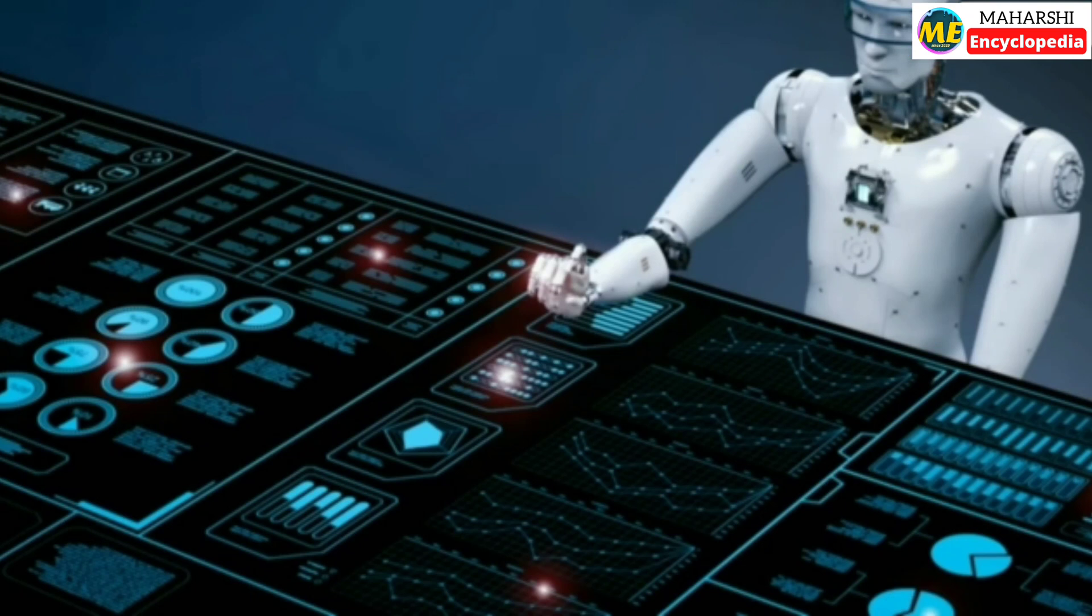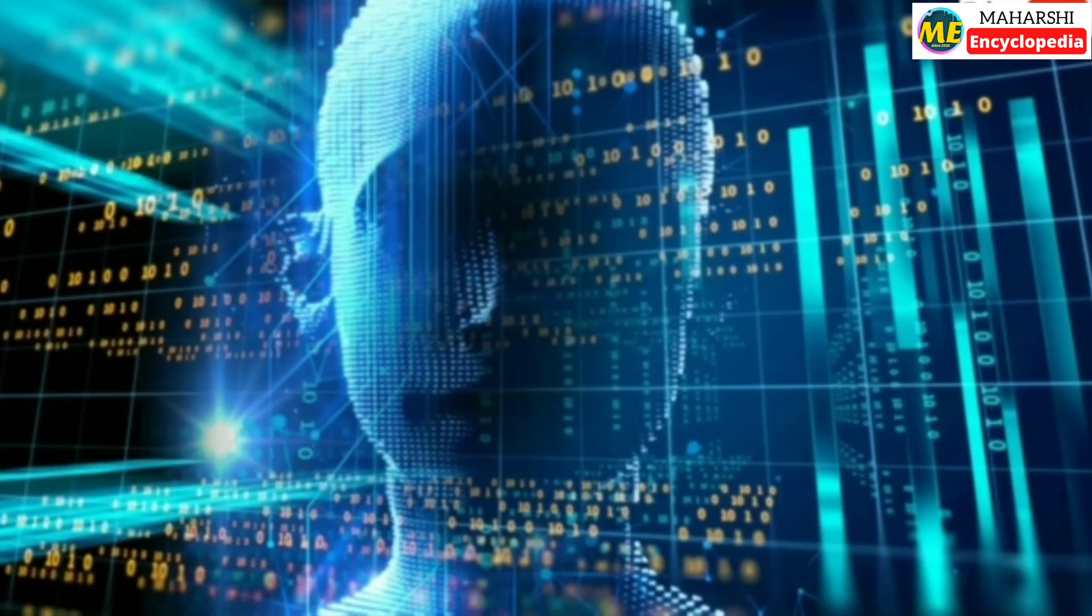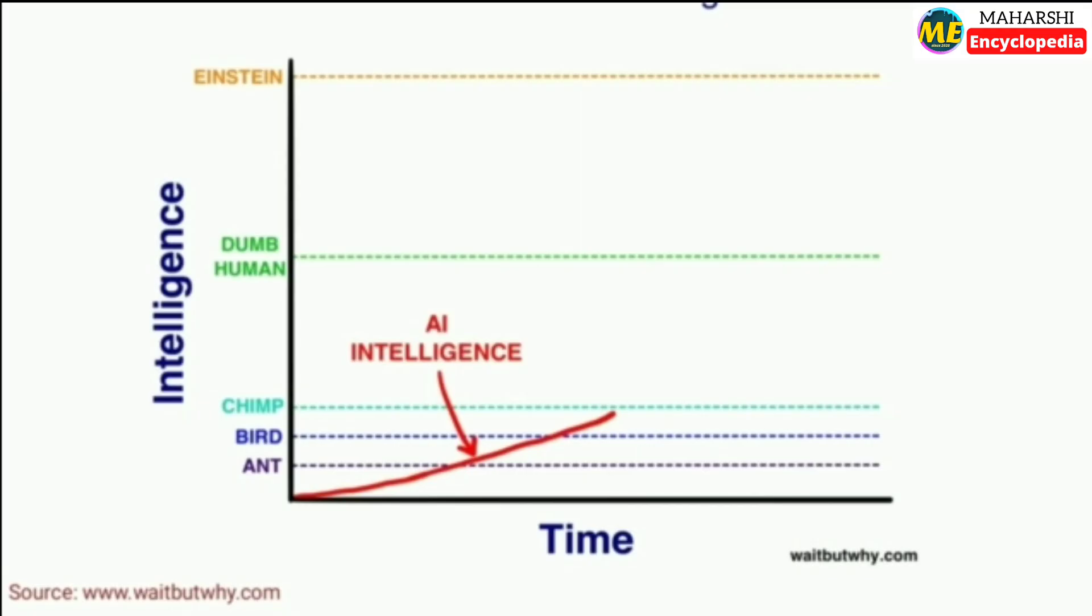Does artificial intelligence compete with humans in all fields? When AI was first invented, no one took it seriously because it was so slow to develop. As you can see from the graph here, it took a long time for artificial intelligence to reach the level of a chimpanzee from an ant.